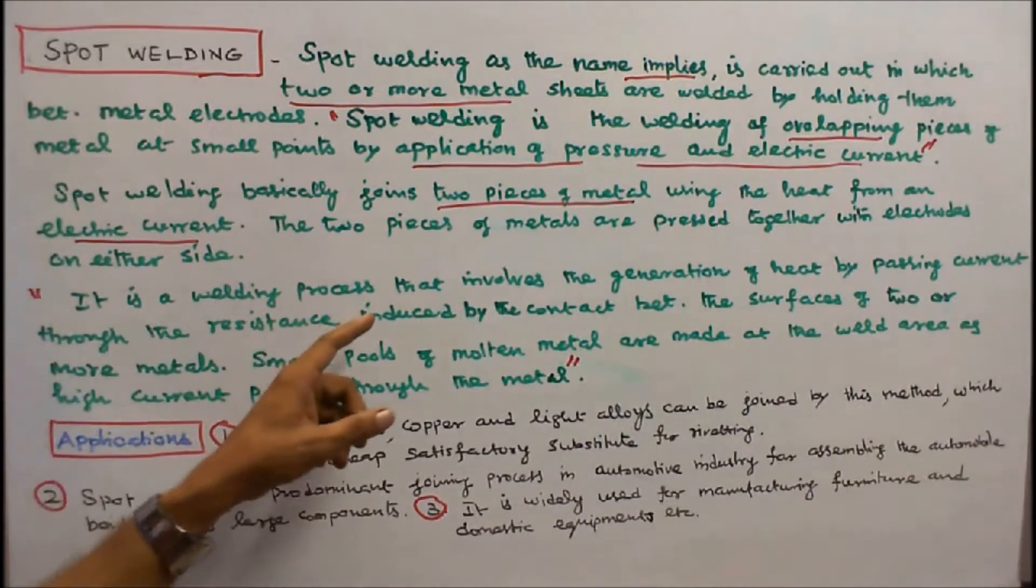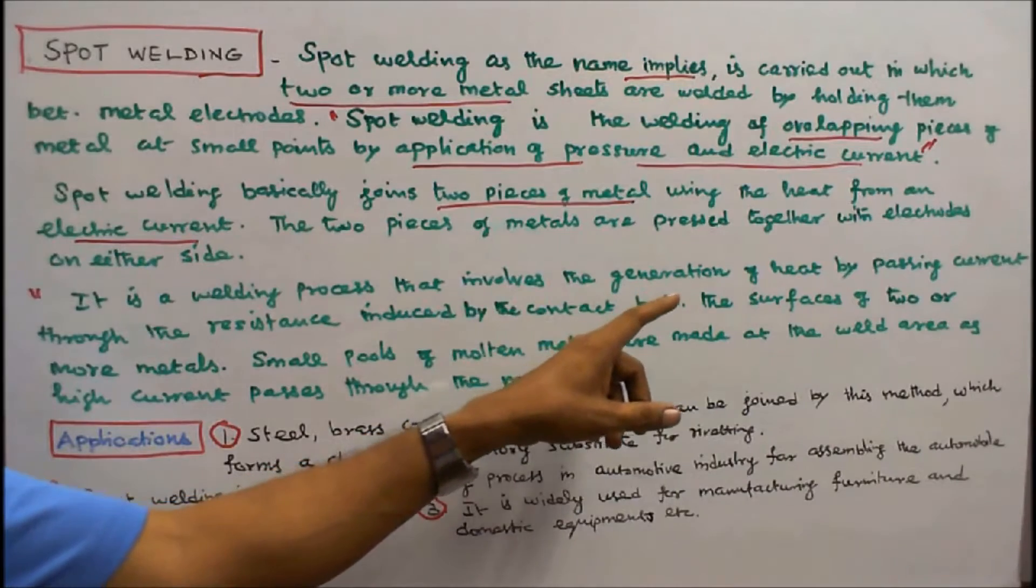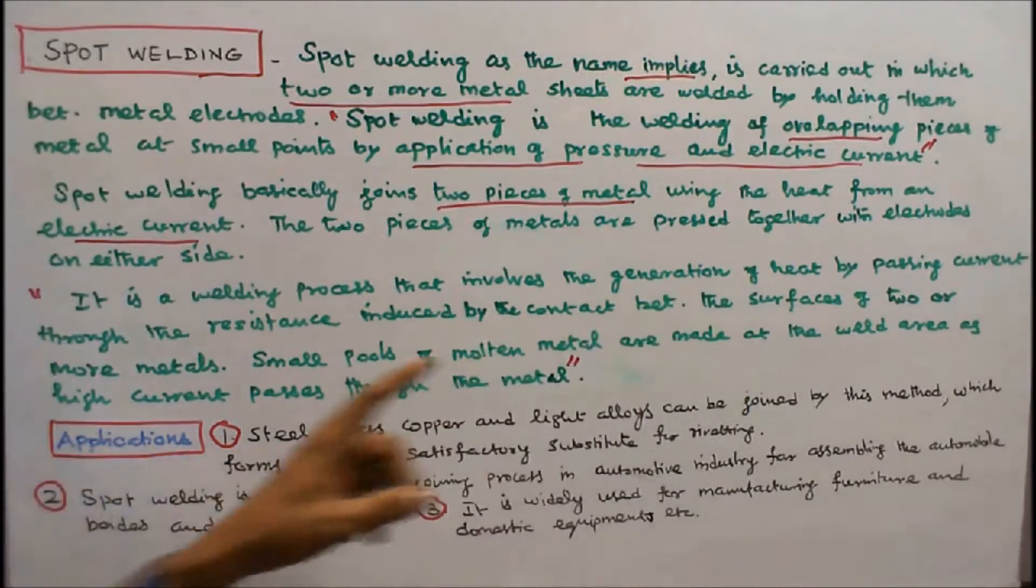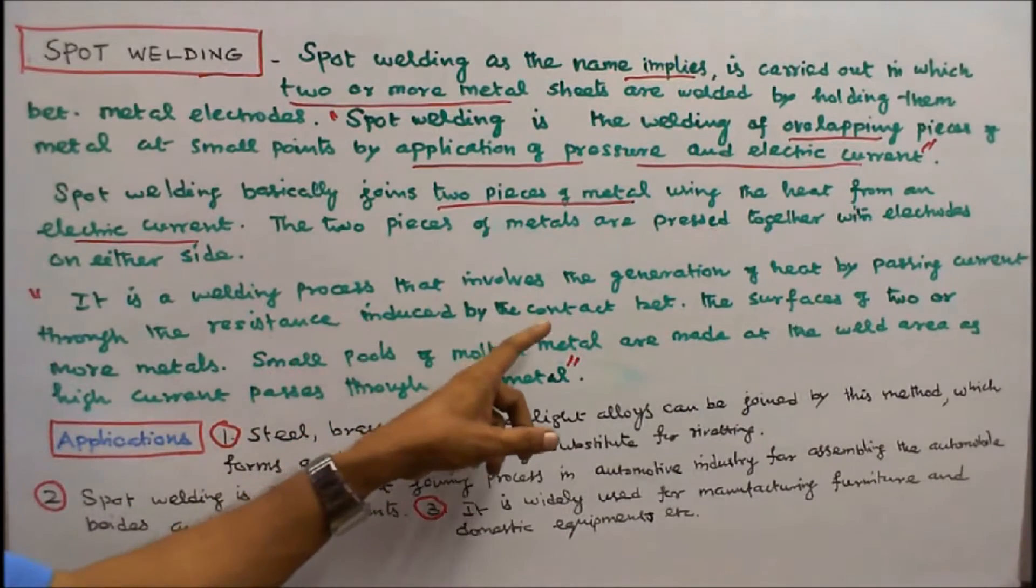It is a welding process that involves the generation of heat by passing current through the resistance induced by the contact between the surfaces of two or more metals.